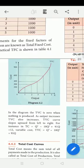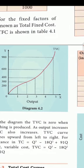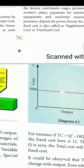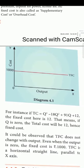The result shows cost and output relationship. TVC is Total Variable Cost. Total Fixed Cost has output on the x-axis and cost on the y-axis.